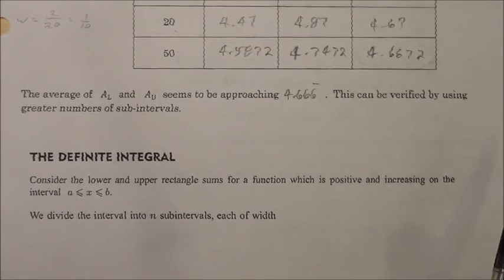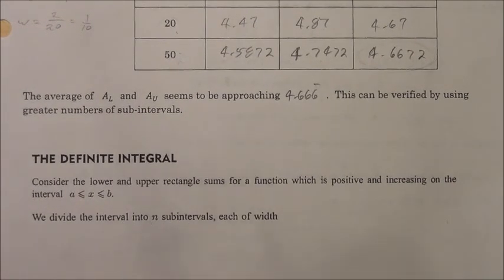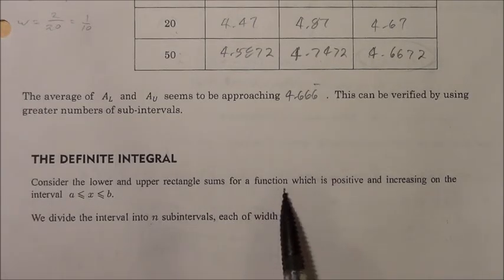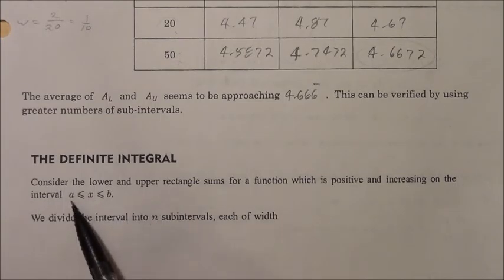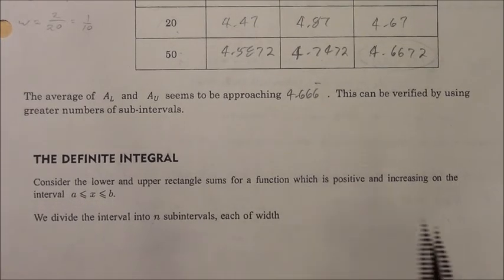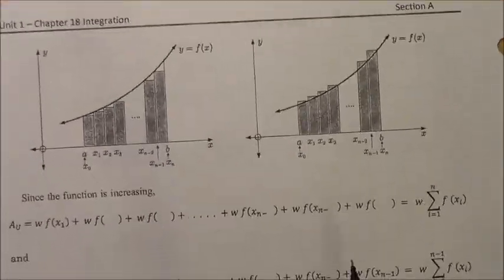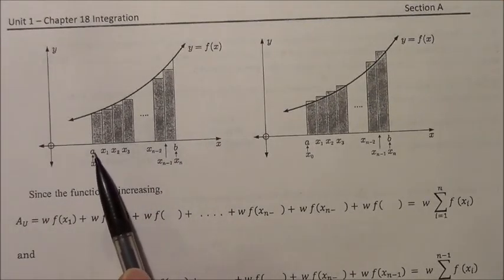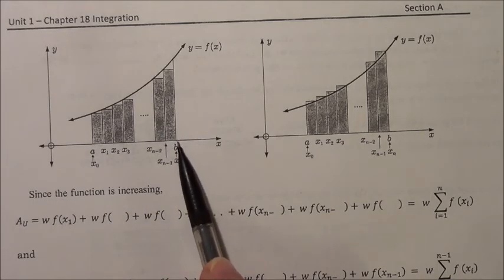Now if we get into the definite integral, we notice that we've got an interval where the function is positive and is increasing from where x is between a and b. Here we've got a as the lower boundary and b as the upper boundary.